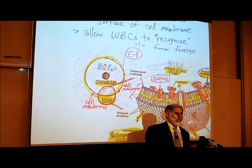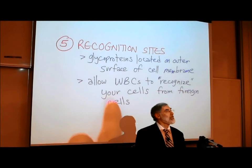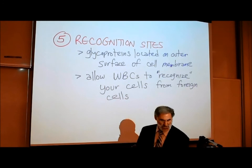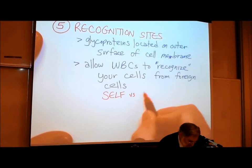These are really identification markers on the outer surface of the cell that allow your white blood cells to tell the difference between self versus foreign — what's you and what's not you.